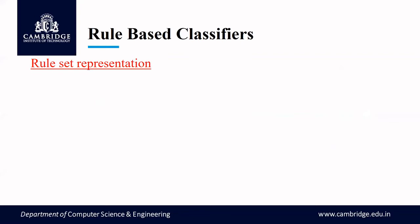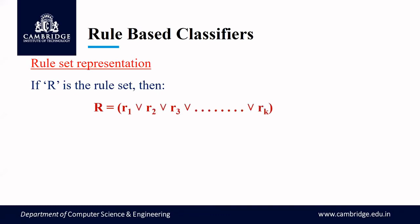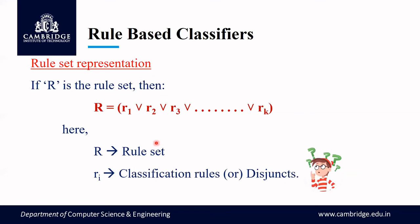Consider a rule set given the name R. Every rule set R consists of several rules, each in disjunct form — r1, r2, up to rk — so there are k rules present. We will make use of either all or a few of these rules for classifying the training set. R is the rule set name, and each ri is a classification rule or disjunct.